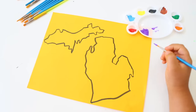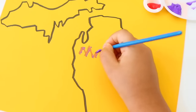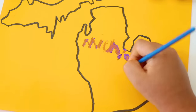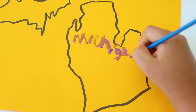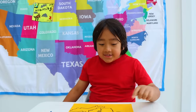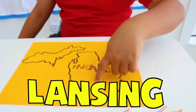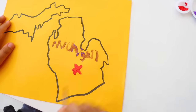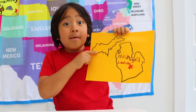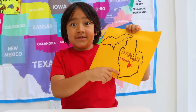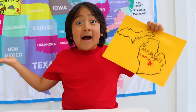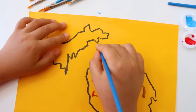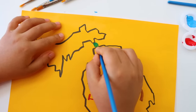I'm going to spell out Michigan. M-I-C-H-I-G-A-N. And the capital of Michigan is Lansing, right here. I'm going to draw a star for the capital. Let's say you live in the upper peninsula but you want to visit the lower peninsula - how do you get there? There's a bridge right here, and it's called the Mackinac Bridge.